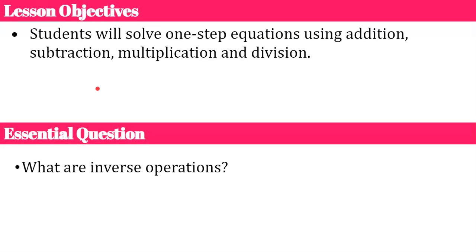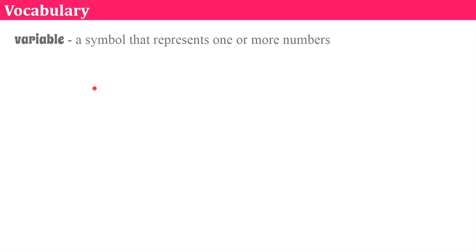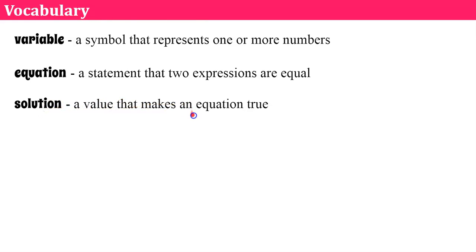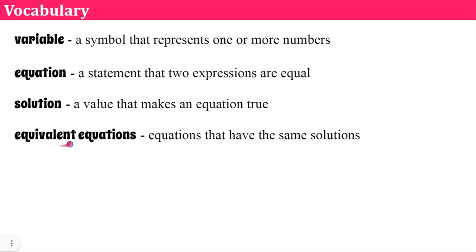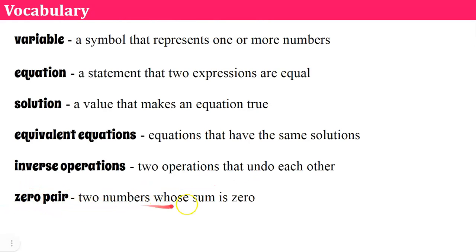This is what I want you to think about today before you approach every single problem: what are inverse operations and what do they mean to you? The vocabulary you need to be familiar with: a variable is a symbol that represents one or more numbers. An equation is a statement that two expressions are equal. A solution is a value that makes an equation true. Equivalent equations are equations that have the same solutions. Inverse operations are two operations that undo each other. A zero pair refers to two numbers whose sum is zero.